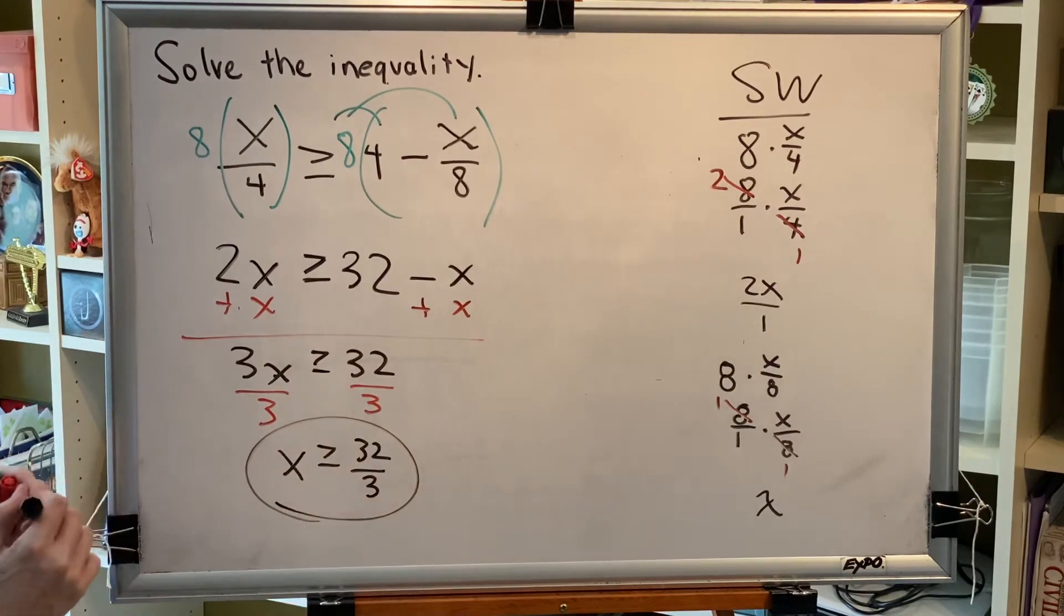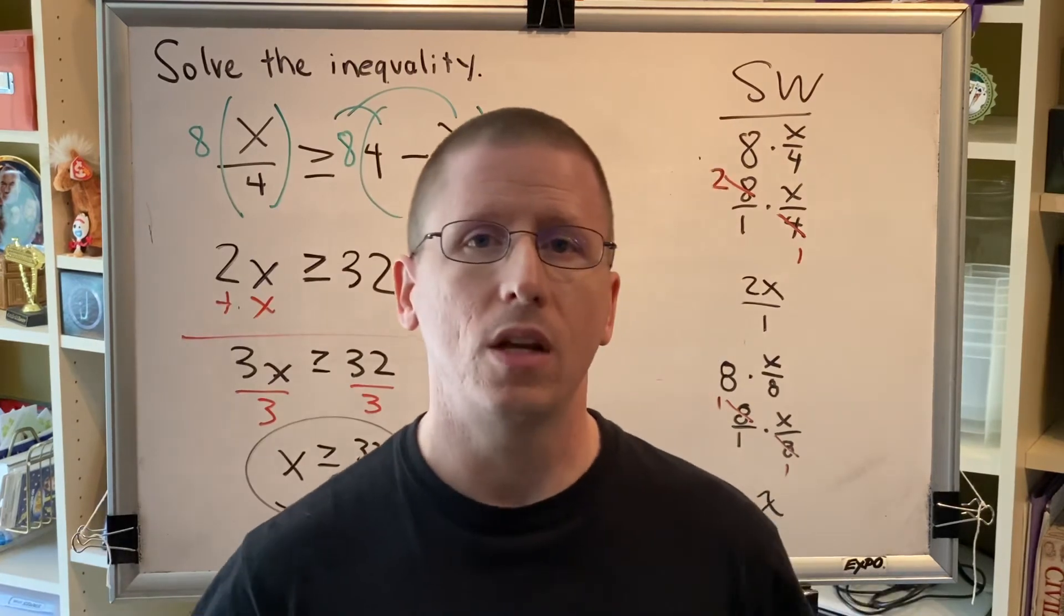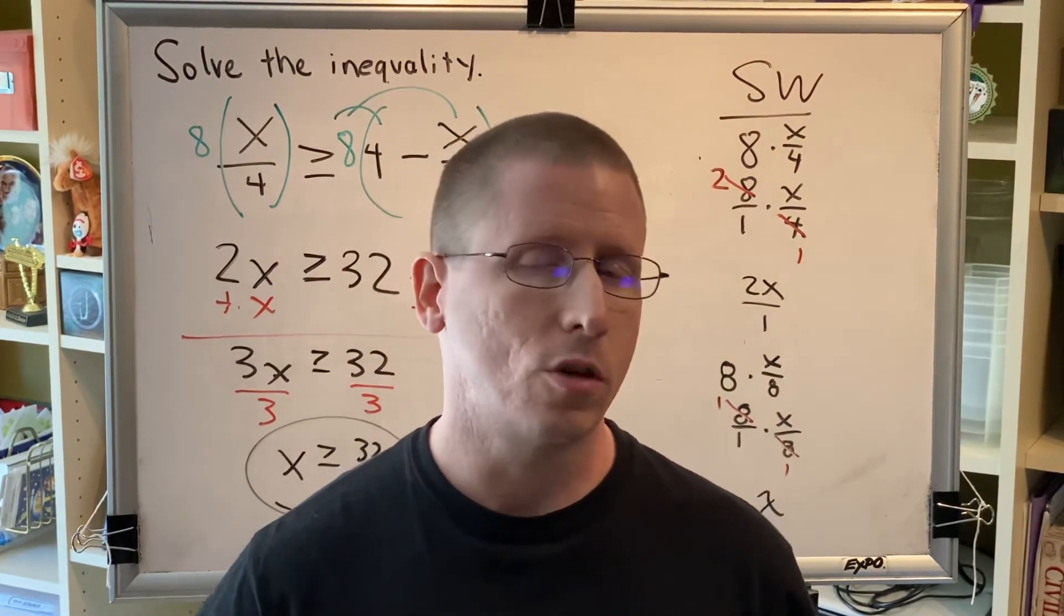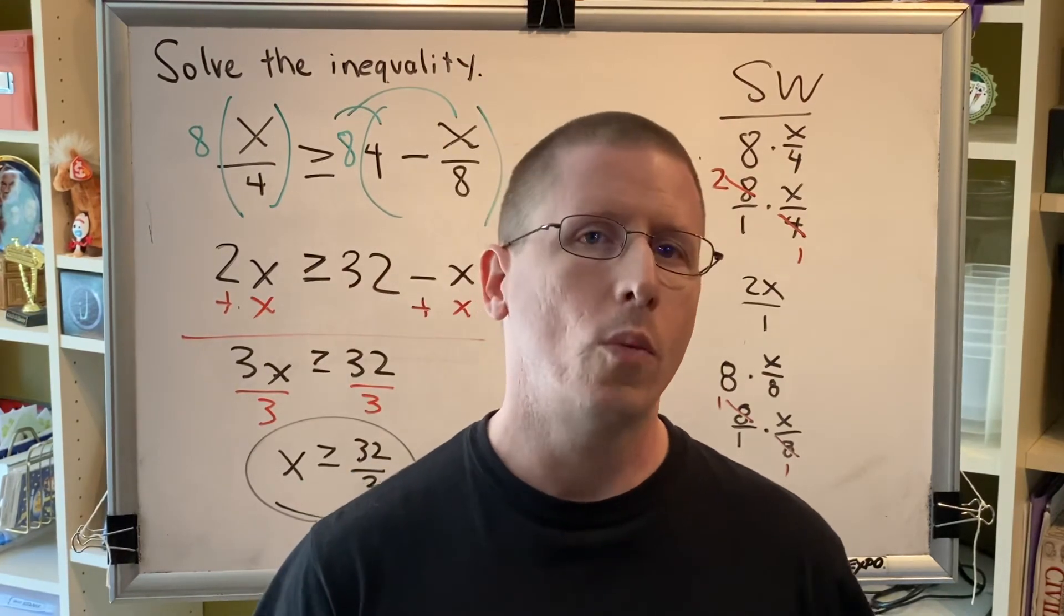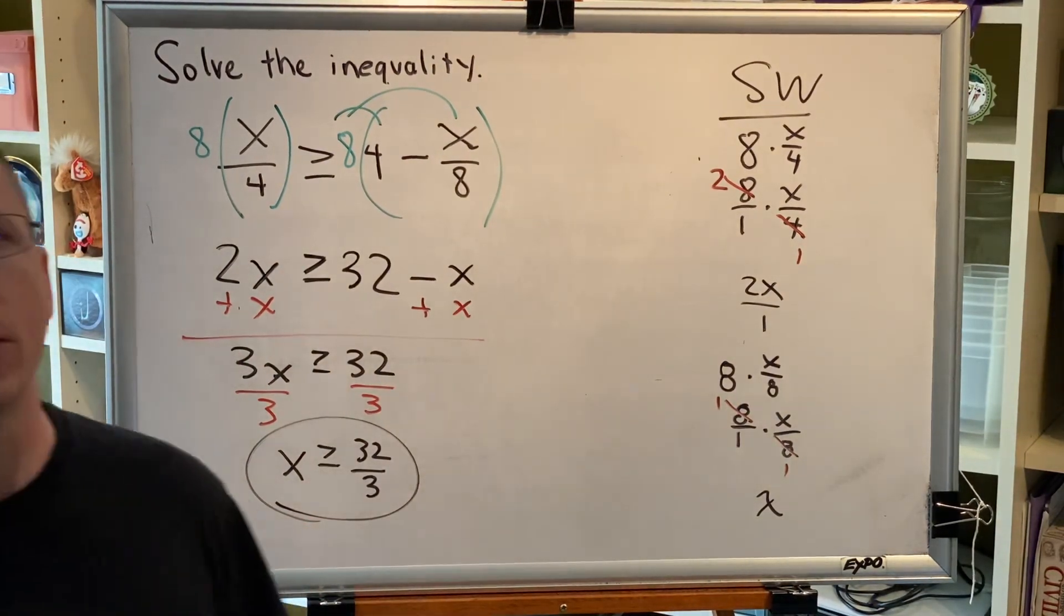We leave our answer as 32 thirds. We do not write a decimal approximation because if we did, it would end in 0.6666 repeating. And that would force us to round. The moment you round, your answer is no longer exact. We want an exact answer. So we leave it as x is greater than or equal to 32 thirds.